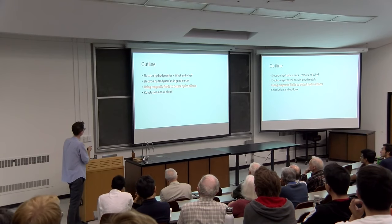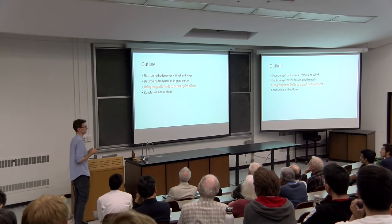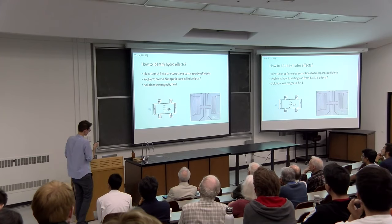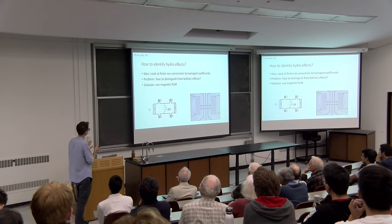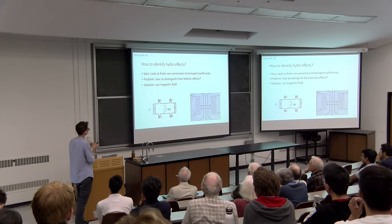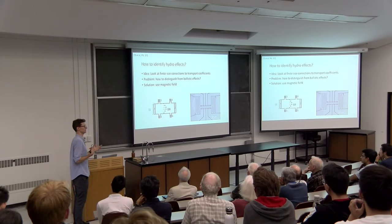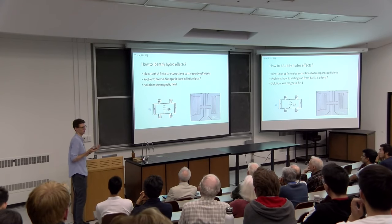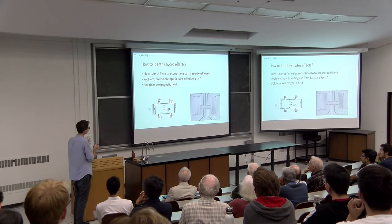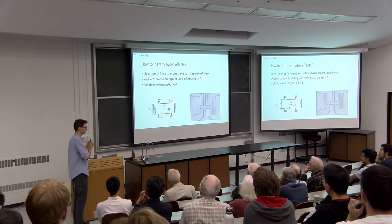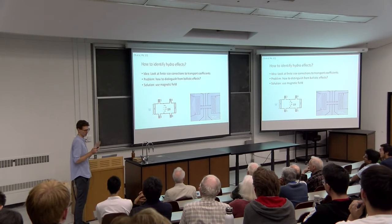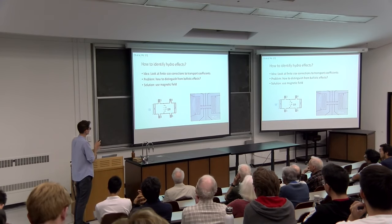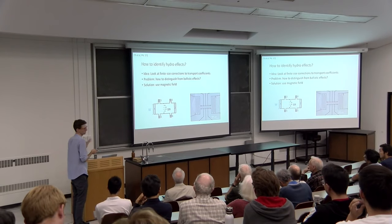I would like to show how we can use magnetic fields to detect viscous effects in solids. One idea is to look for size dependence in transport properties — we showed that resistivity should scale like 1/W². But ballistic effects, where boundary scattering dominates resistivity, can also lead to size-dependent resistivity. We need to distinguish between these two cases, and using a magnetic field turns out to be a very good idea for that.